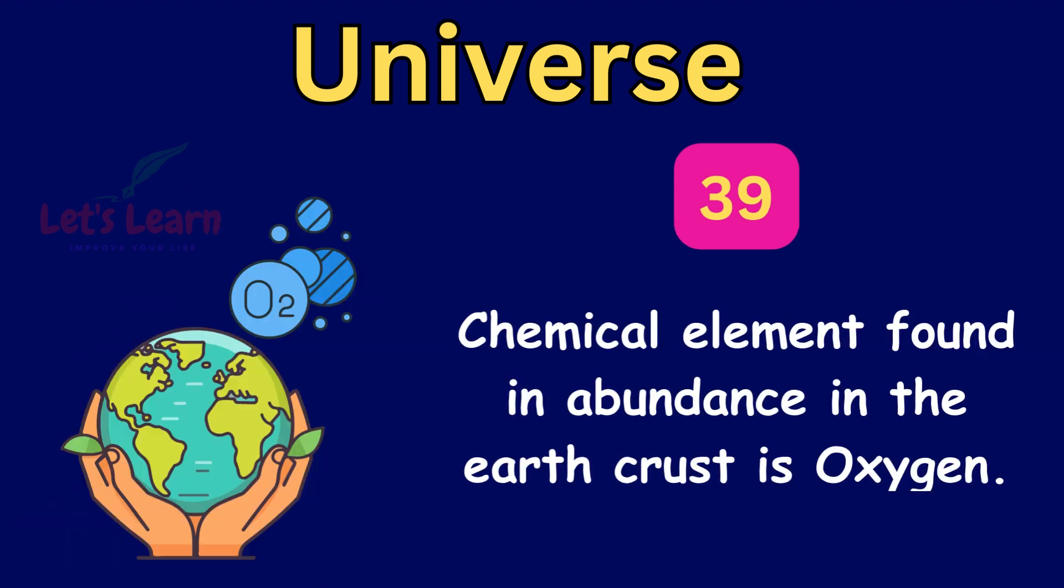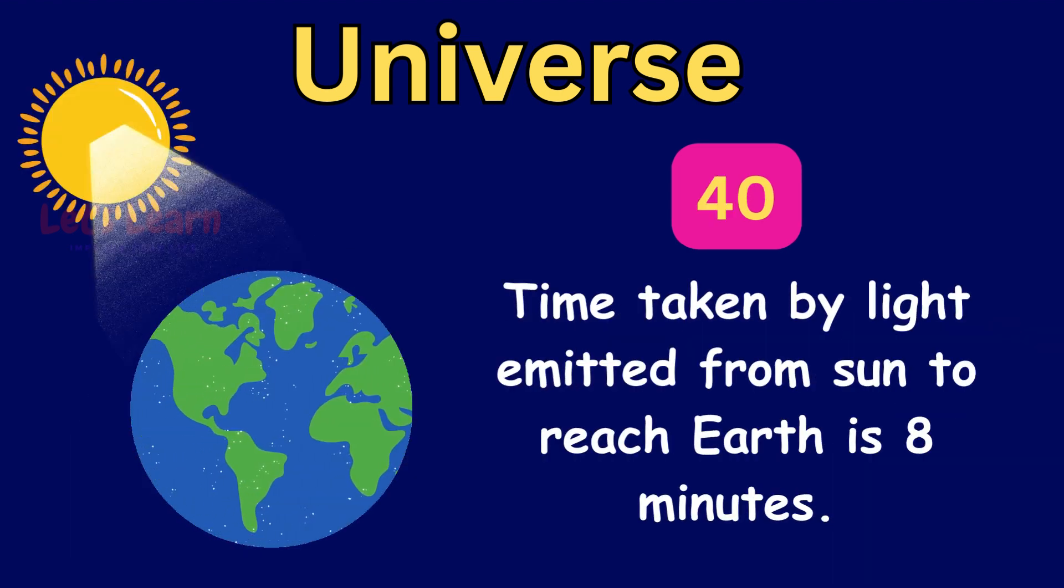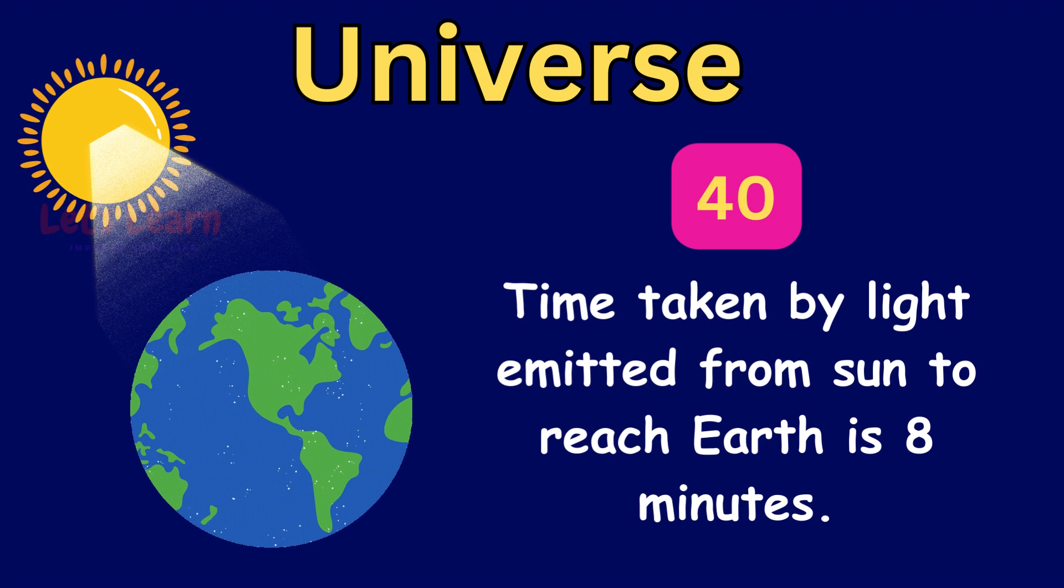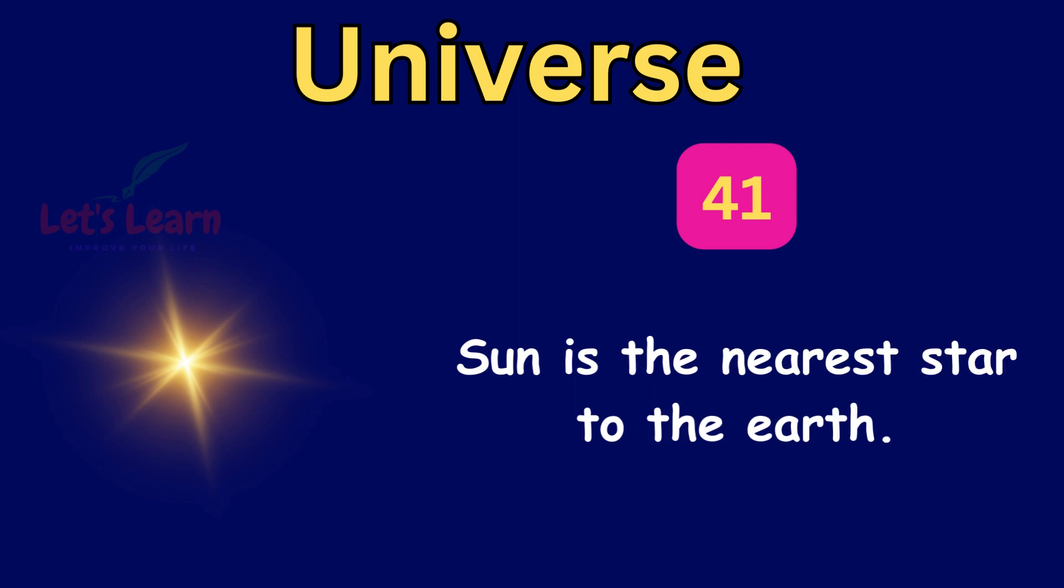The chemical element found in abundance in the Earth's crust is oxygen. Time taken by light emitted from Sun to reach Earth is 8 minutes. Sun is the nearest star to the Earth.